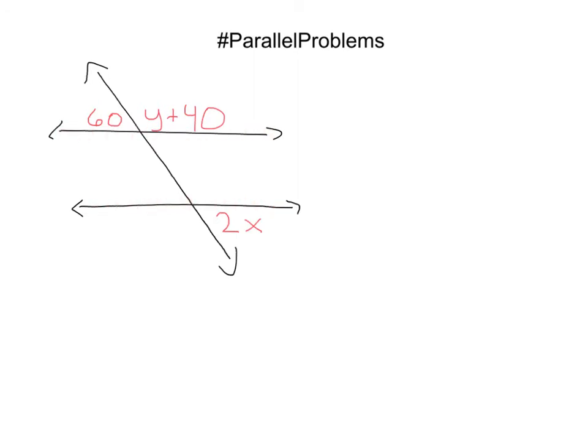First step, you want to recognize what types of relationships we have. So first, I notice that these two angles, this 60 degree angle, this y plus 40 degree angle, are on a line. And they are a linear pair, which means that those angles have to add up to 180 degrees.